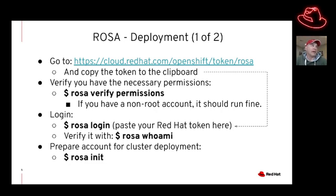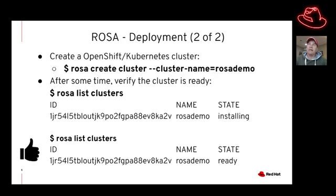The next step is to type ROSA login. At that point, paste your Red Hat token that you got in the previous step. You can verify it with ROSA whoami. Once done, you can prepare the account for cluster deployment by typing ROSA init. Once you've gotten this far, you can use the ROSA command to actually deploy a cluster.